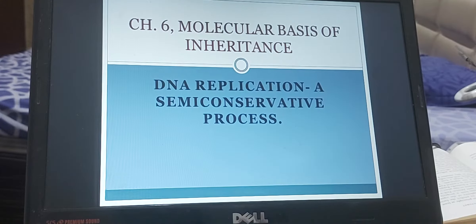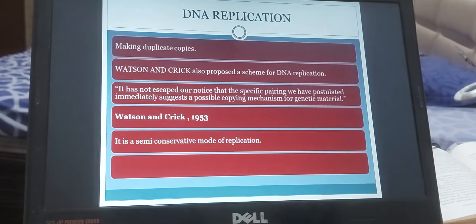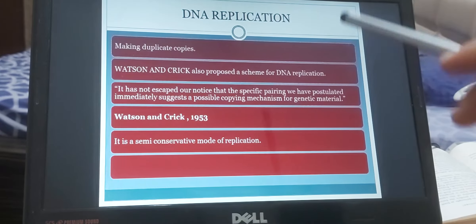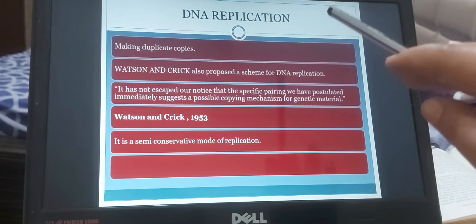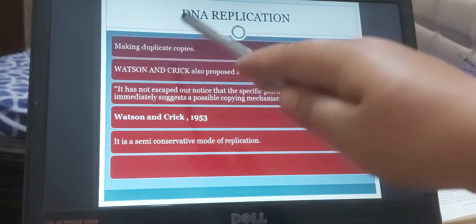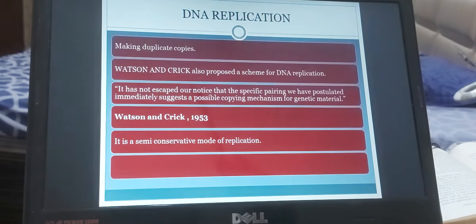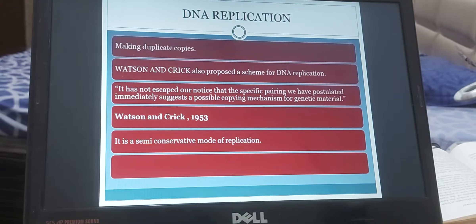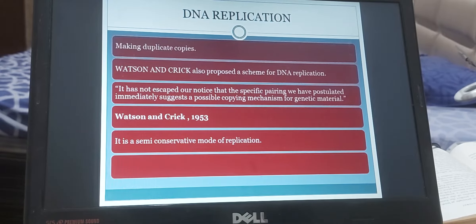DNA replication is a semi-conservative process. So let's discuss about it. First of all, we need to understand what is DNA replication. Replication, the term has been derived from replica. Replica means making its duplicate copy. So DNA replication means making duplicate copies. The process by which the DNA is making its duplicate copy is known as DNA replication.